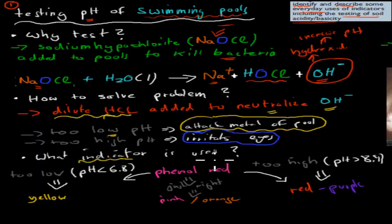Well what we can use is we can use one of these indicators. So we use an indicator. In this case we use phenyl red. Now phenyl red has some different properties. If the pH were to be too low, so for example if the pH is below 6.8 and this would be considered too low, that phenyl red turns yellow.